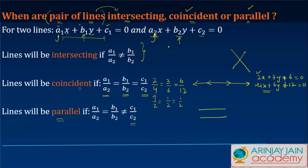On the other hand, if I had 2x + 4y + 8 = 0 and 3x + 5y + 3 = 0, then a1/a2 equals 2/3 and b1/b2 equals 4/5. These two are not equal, so we say these lines are intersecting because a1/a2 is not equal to b1/b2.